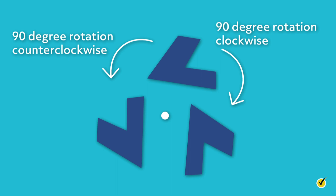A great math tool that we use to show rotations is the coordinate grid. Let's start by looking at rotating a point about the center. If you take a coordinate grid and plot a point and then rotate the paper 90 degrees or 180 degrees clockwise or counterclockwise about the origin, you can find the location of the rotated point.